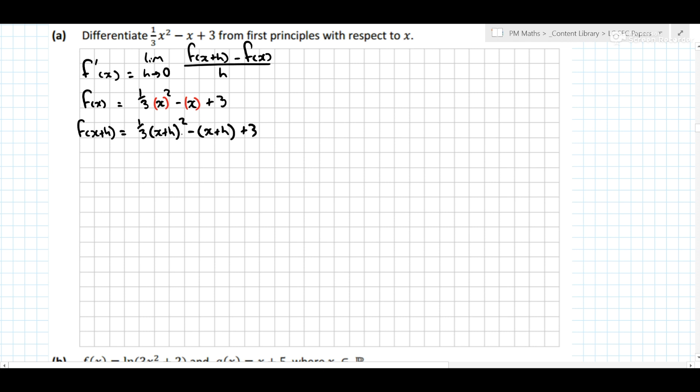At this point I would multiply this out as well, so it's x squared plus 2xh plus h squared minus h squared minus x minus h plus 3, that's your f of x plus h.